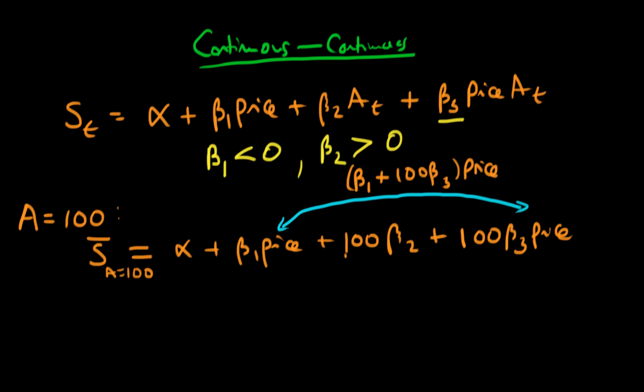So what interpretation is beta 3 and what sign would we expect beta 3 to have in this case? Well, we would actually expect that beta 3 would be greater than zero. Why would we expect that?